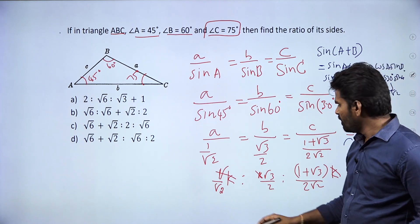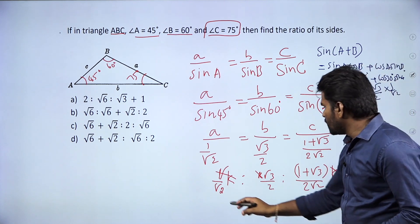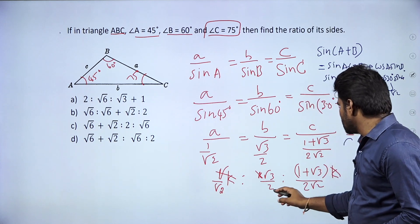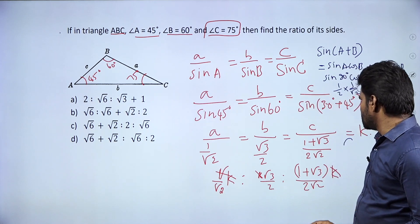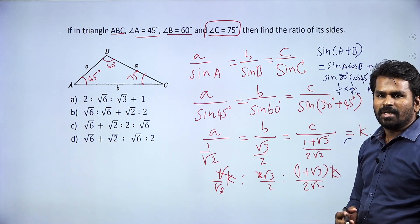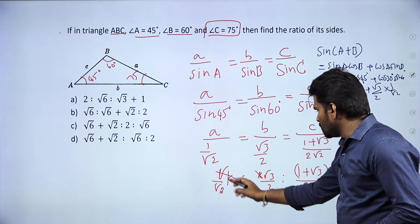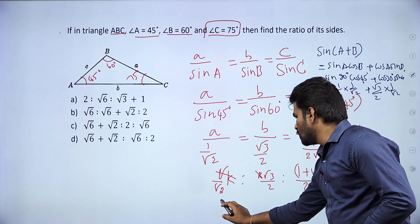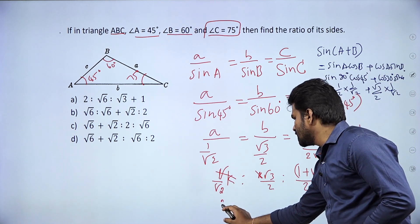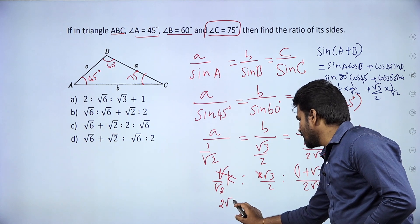To take LCM of the denominators √2 and 2, we get 2√2. We then multiply through to make all denominators equal to 2√2.